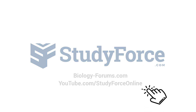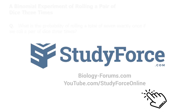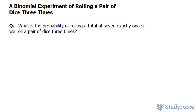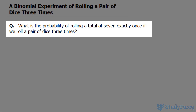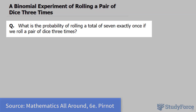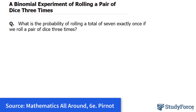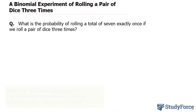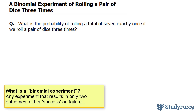In this lesson we will look at a binomial experiment of rolling a pair of dice three times. Specifically, the question asks: what is the probability of rolling a total of seven exactly once if we roll a pair of dice three times? To answer this question effectively, first we need to learn what the probability of rolling a seven is.